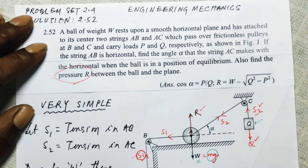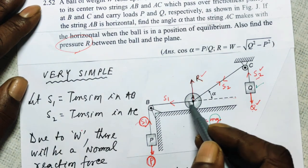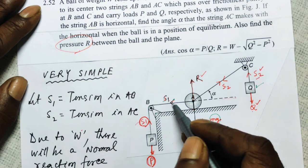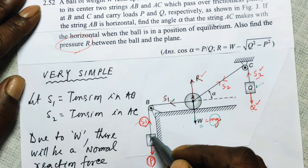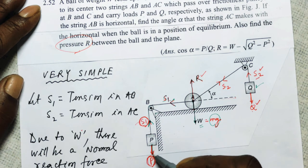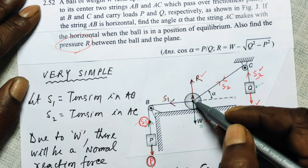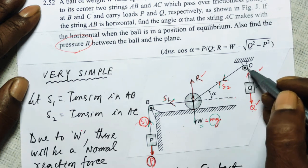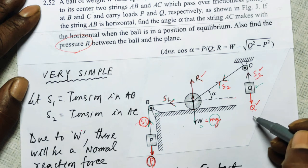Let S1 be the tension in string AB. S1 is the same string going to both sides — if you consider point A, S1 acts towards the left. Similarly, let S2 be the tension in string AC. If you consider point A, S2 acts in the direction of that string. The hanging weight is Q, and that equals the pull of the earth, i.e., its mass times g.